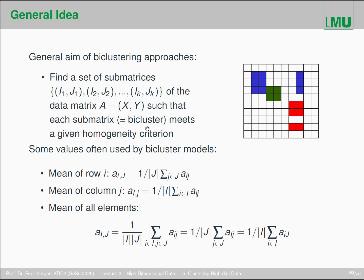For example, all values should be the same, or the same values in columns, or the same values in rows. We also use some notation common in bi-clustering models: the mean of row i is the mean across all features in J, and the mean of column j is the mean across all objects in I. The mean of all elements in the sub-matrix A_IJ is the sum of all row means or column means.